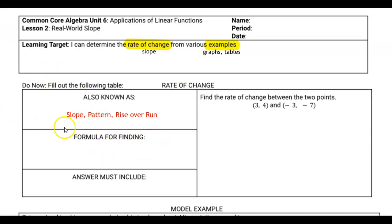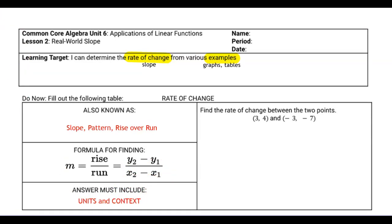The formula for finding rate of change, the slope formula, looks like this. The formula for finding is, of course, y2 minus y1 over x2 minus x1. You can also use rise over run, which we will be using when we look at graphs, but you can always use y2 minus y1 over x2 minus x1, even if you're looking at the graph, just by identifying the points on the graph. The answer must include units and context here. Units meaning I can't give an answer of four. I have to say four miles per hour or four dollars per minute.